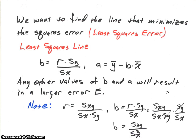We want to minimize that squared error, so we would like the error value e to be as small as possible. This minimization is sometimes called the least squares error — 'least' meaning that we're trying to minimize the squares error term. Therefore we call it the least squares error, and the line that does that minimization we call the least squares line.